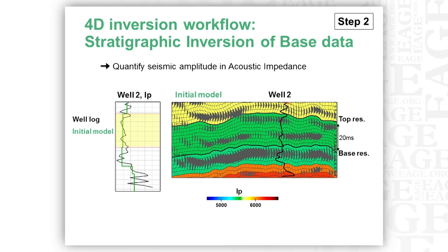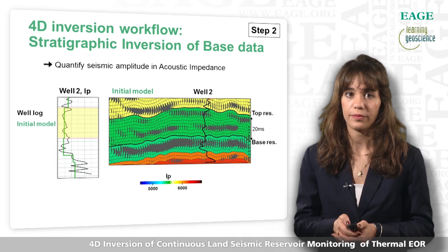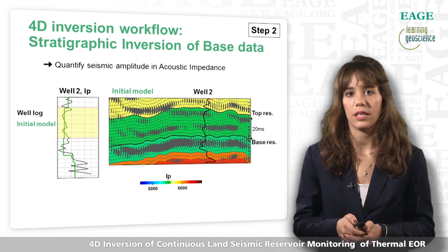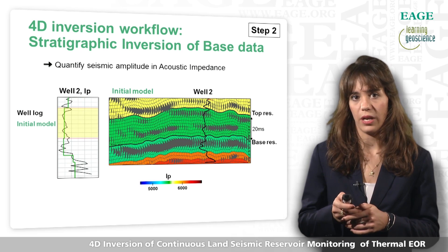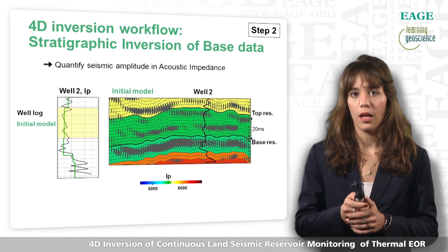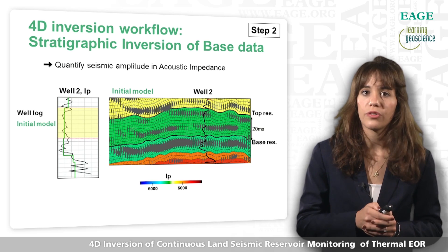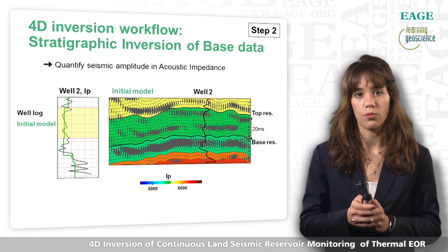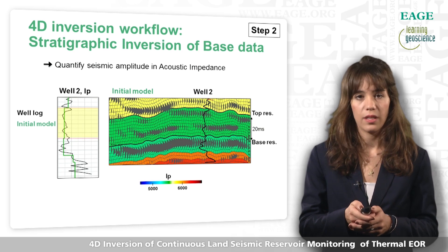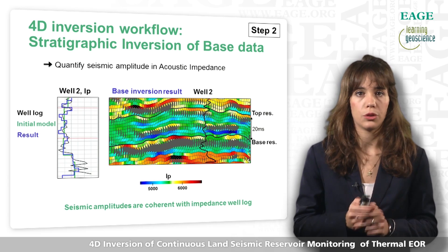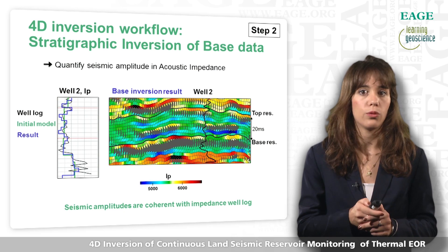The second step is the stratigraphic inversion of the base data to quantify the seismic amplitude in terms of acoustic impedance. On the left, you see the impedance well log and the initial model. On the right, you see a 2D section with the amplitude values, the stratigraphic layers, and the initial model from the well log. The base is taken prior to steam injection for the 2D monitoring and in April 2012 for the 3D monitoring — one year after steam started to be injected. The seismic amplitudes are consistent with the impedance well log.